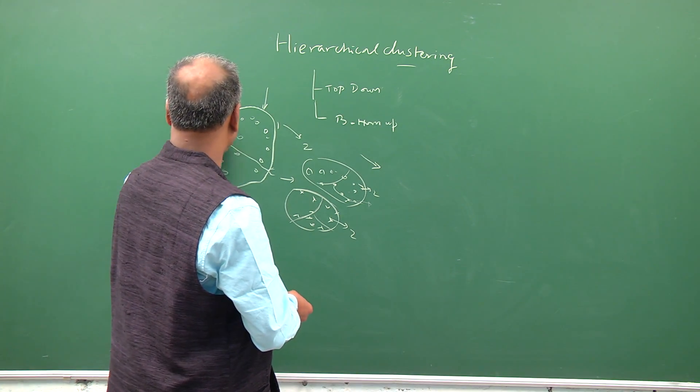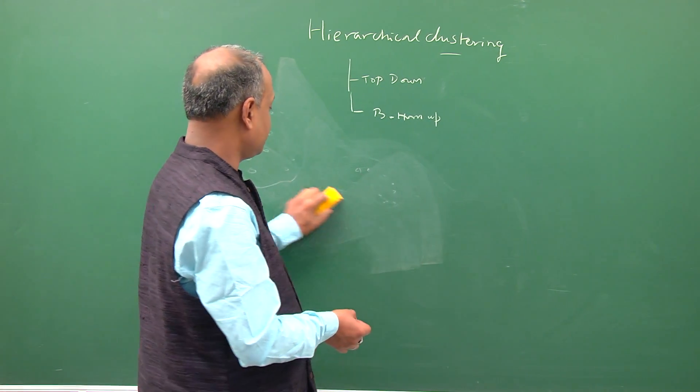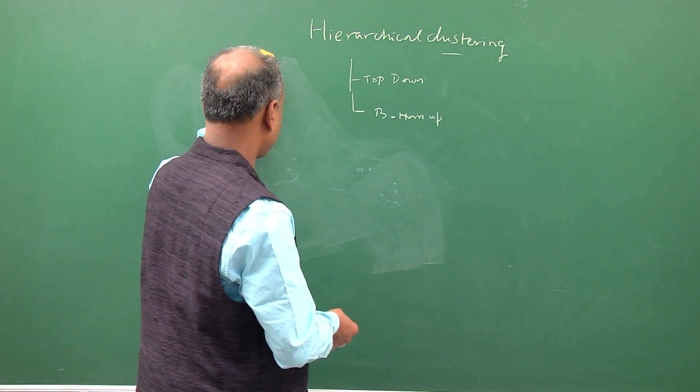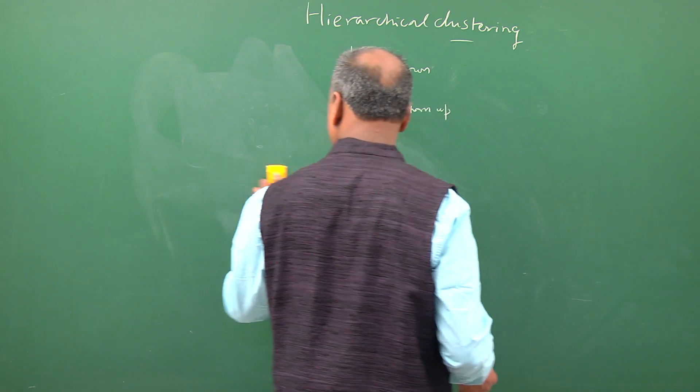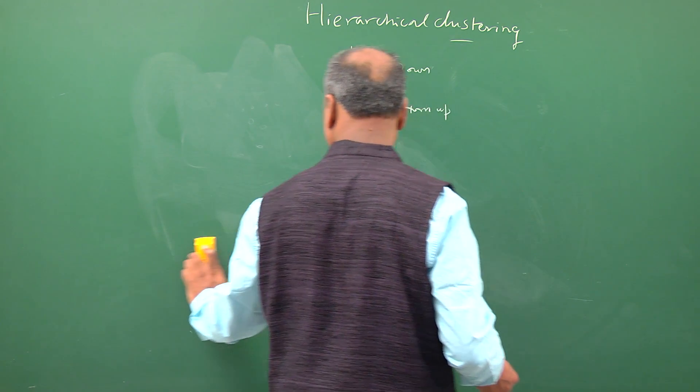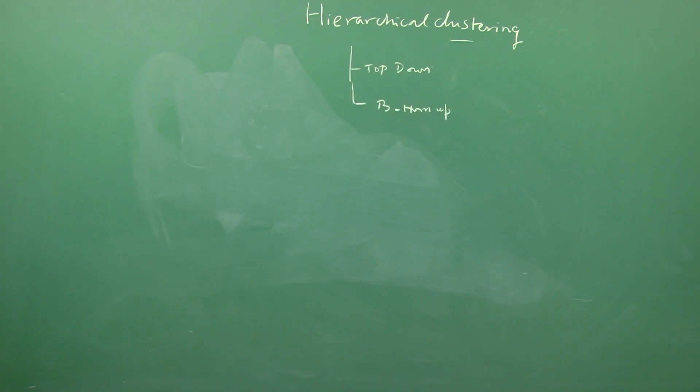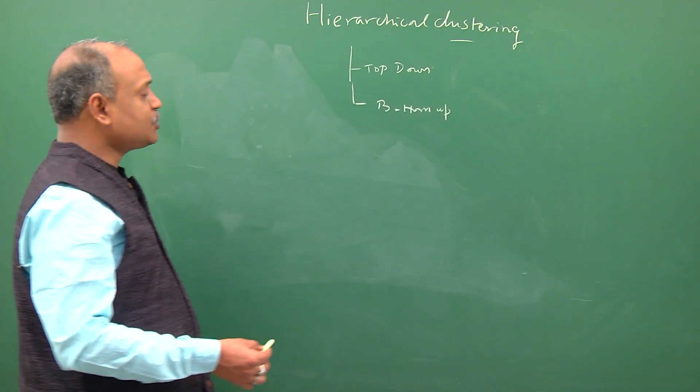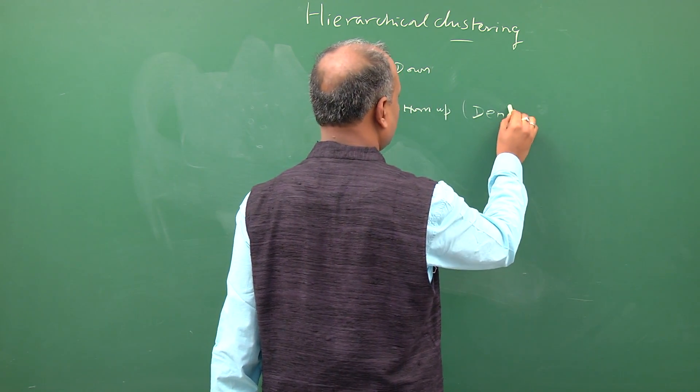So top-down is one such approach where you don't have prior knowledge of what is a good set of clusters which is useful for the target problem. On the other hand, we have a far more scientific approach to doing a bottom-up clustering, and in doing bottom-up clustering we use a technique known as dendrogram.